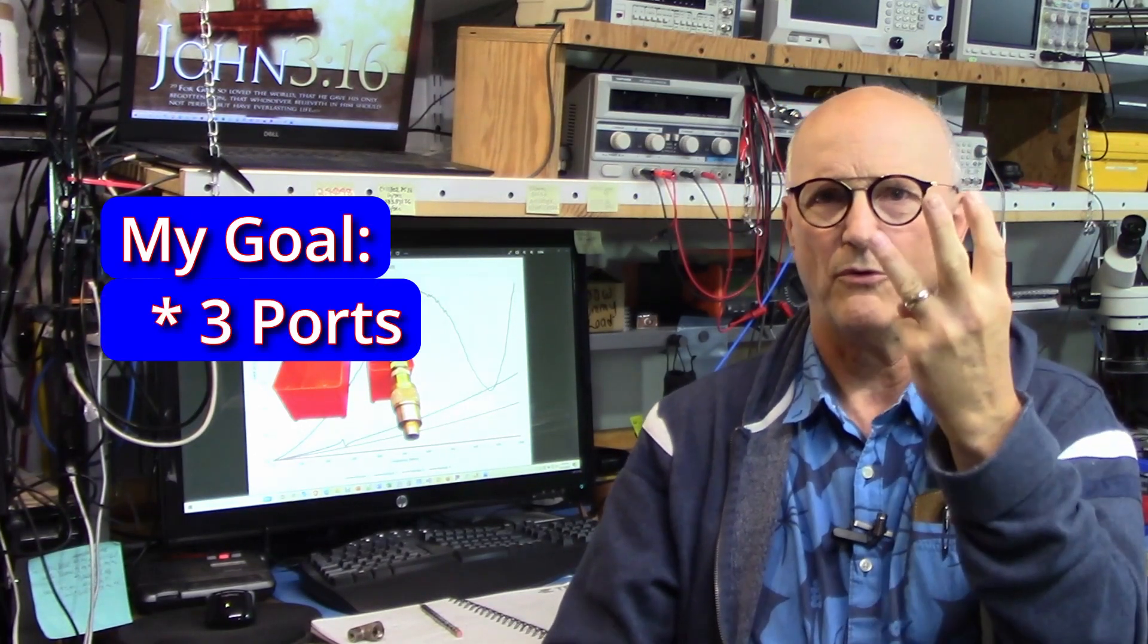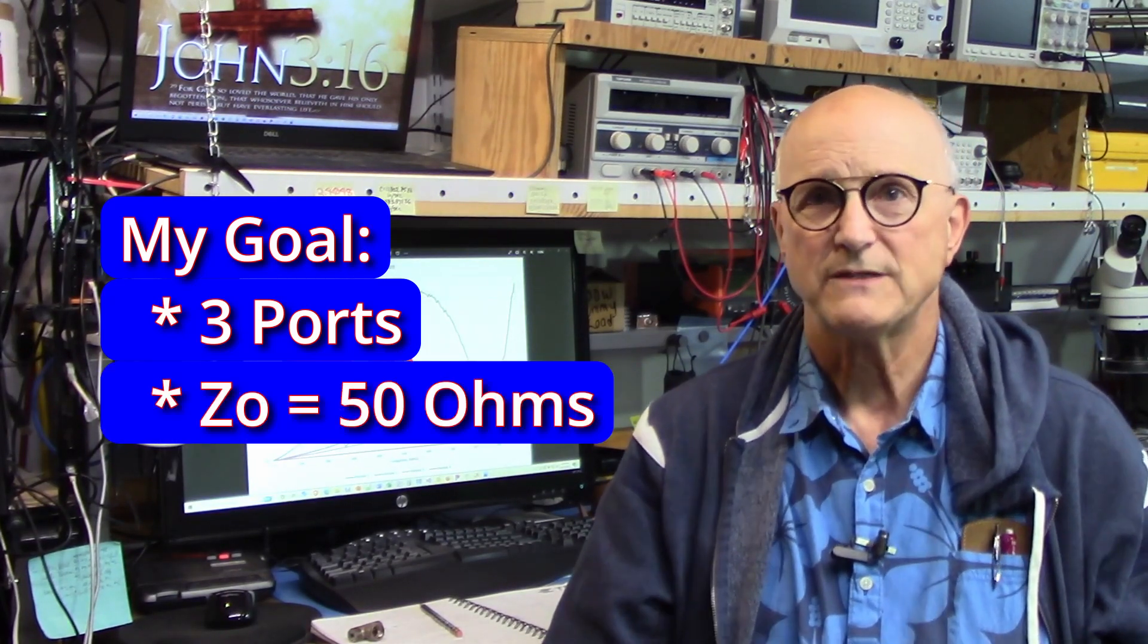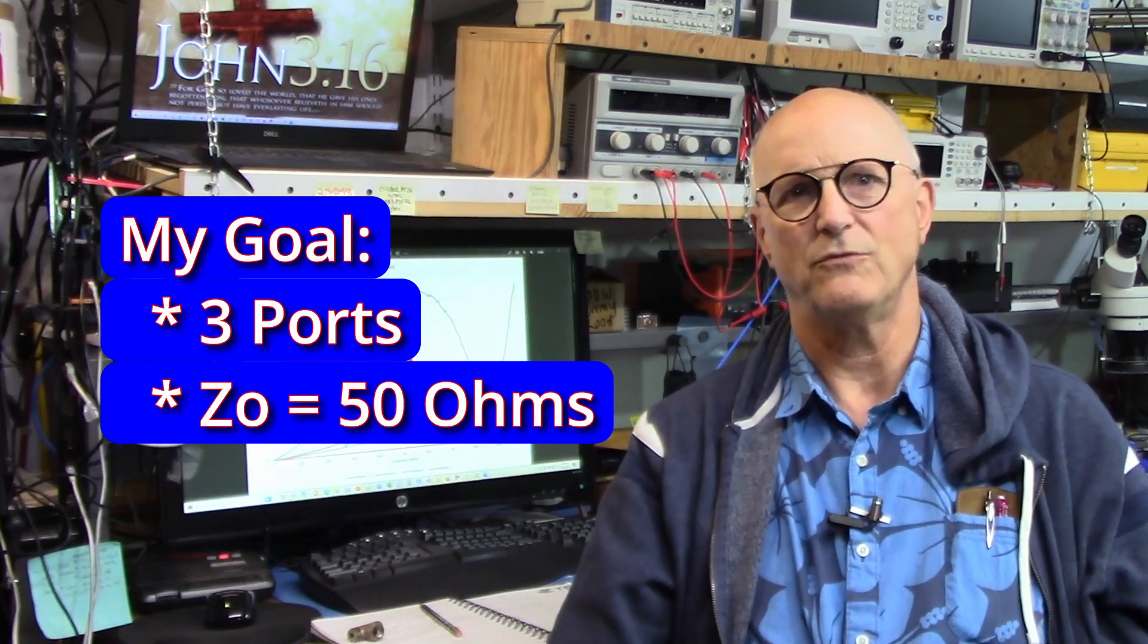Now, what about my experiment? My goal was to create an RF power splitter with three ports, one for the source and one for each of the two possible loads. My target impedance was 50 ohms. So let's do the math for this project.